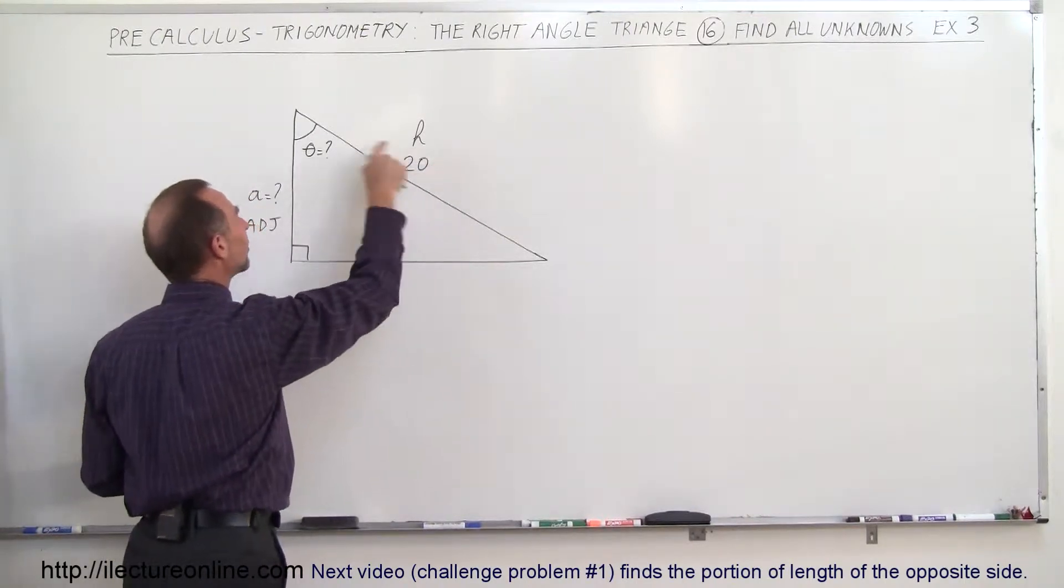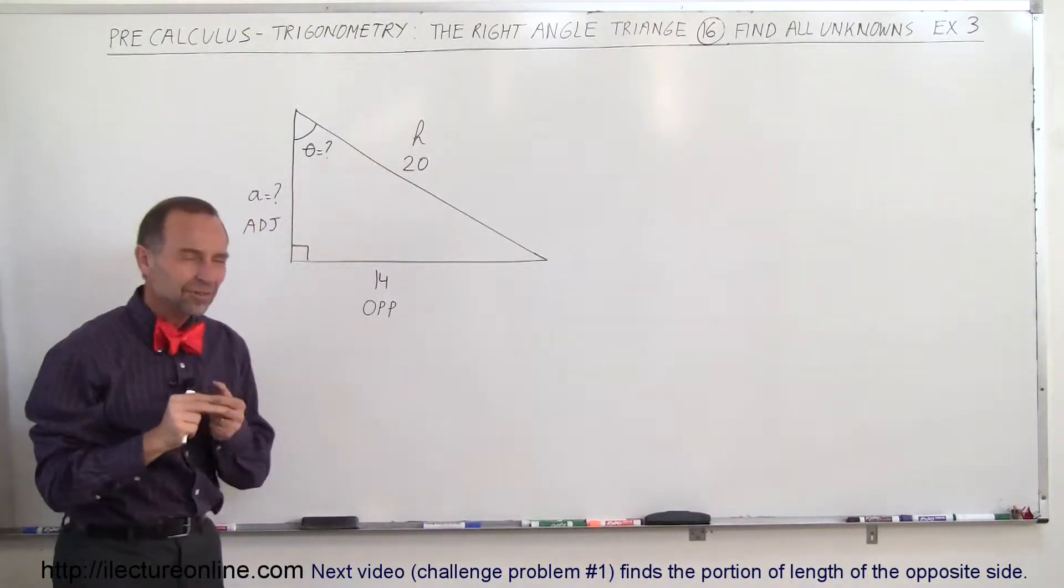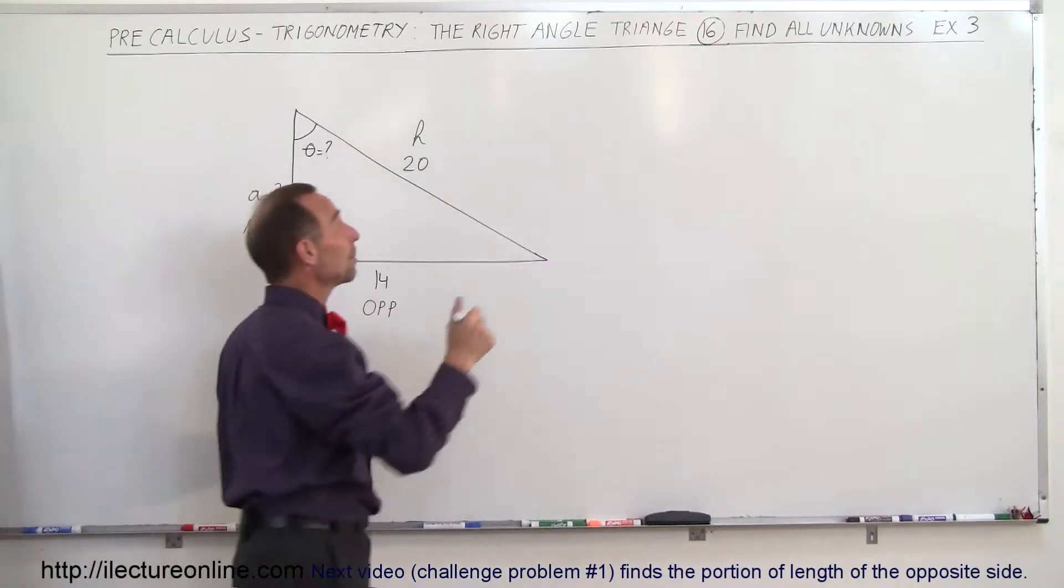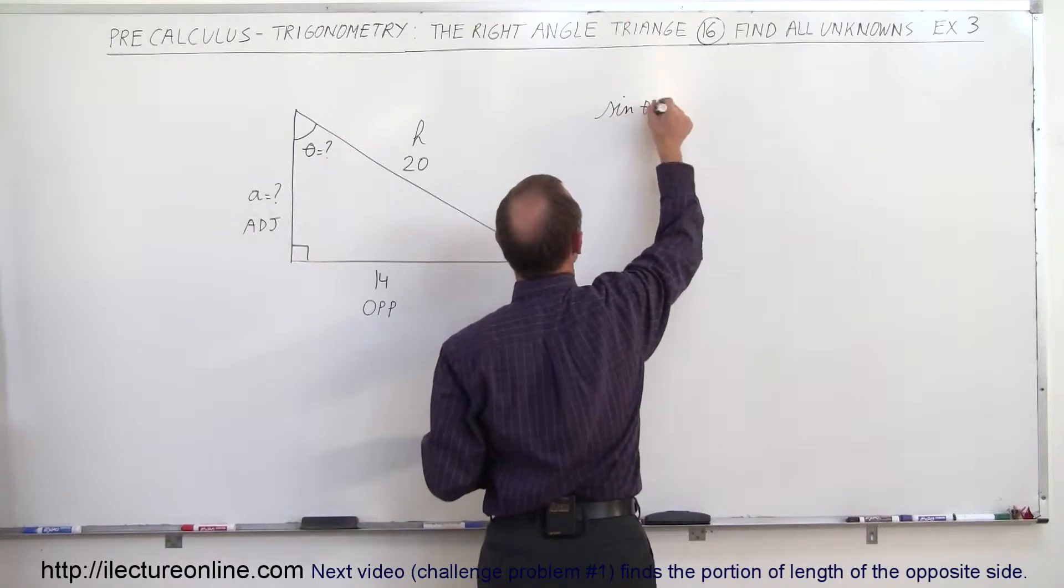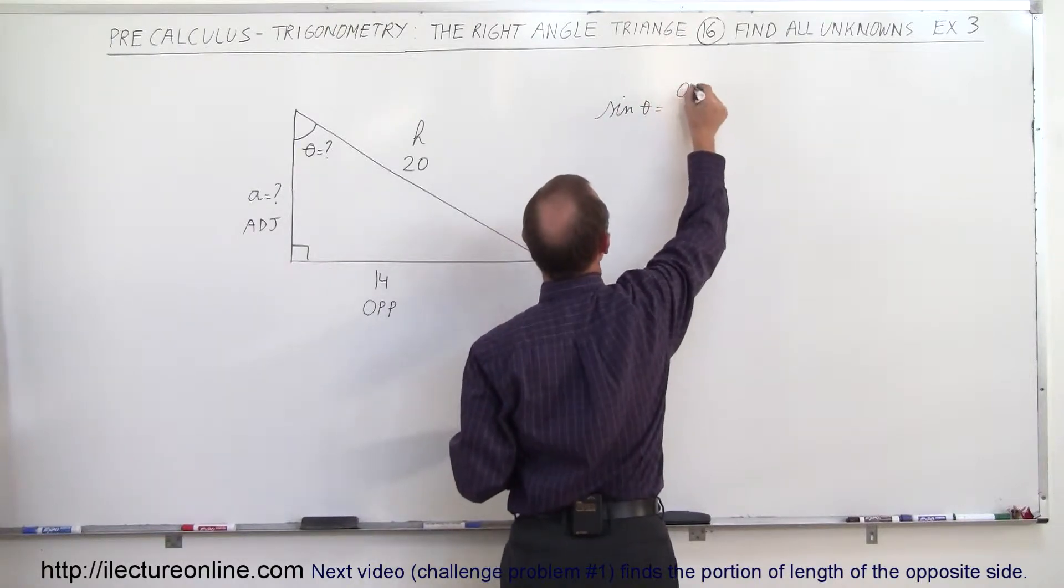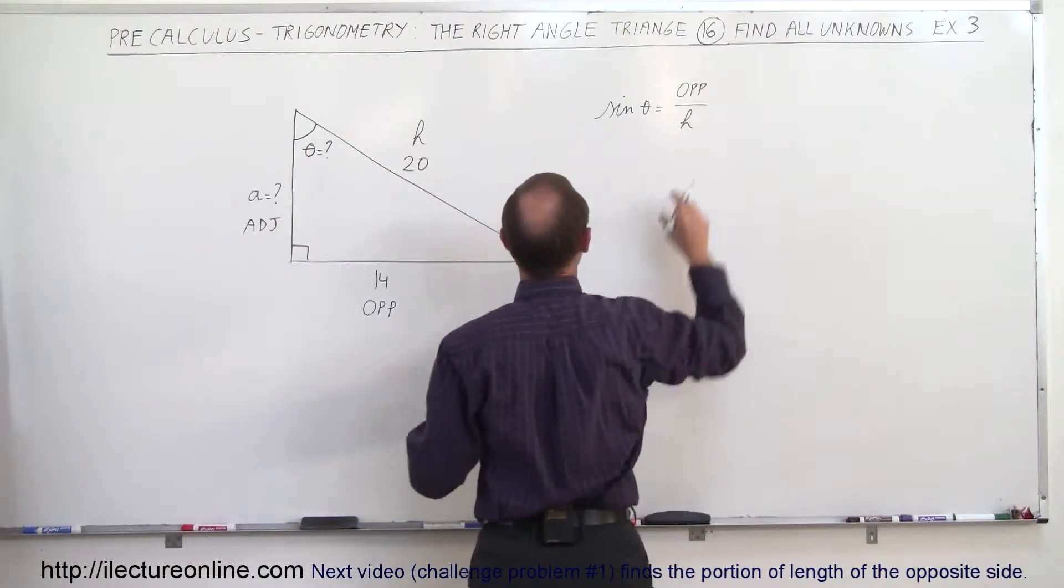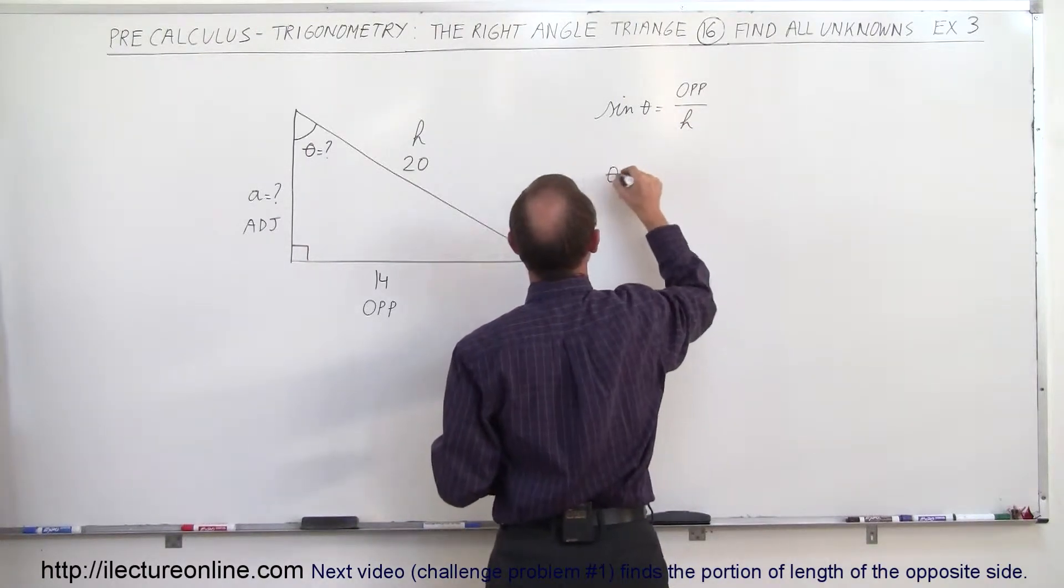We're given the hypotenuse, we're looking for the angle. Opposite side, hypotenuse—that's the sine. Remember that sine of the angle theta equals the ratio of the opposite side divided by the hypotenuse. So if we know these two, we can find the angle by taking the inverse sine of the ratio of the opposite side divided by the hypotenuse.